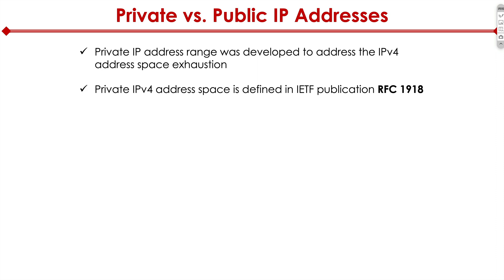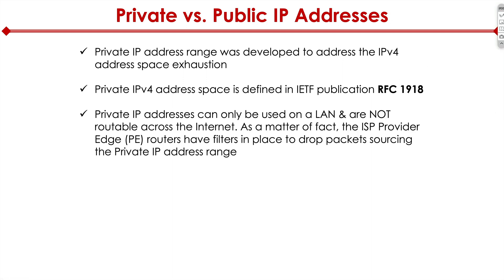What happened was RFC 1918 was published, and it defined what's called private IPv4 address ranges. These addresses can only be used on the LAN — they're not routable on the internet. The service providers have filters in place to drop packets on their internet routers if the packets are sourcing from a private IP address range.